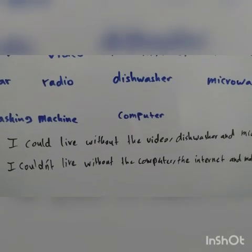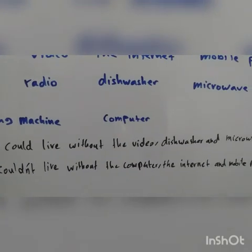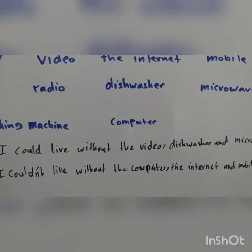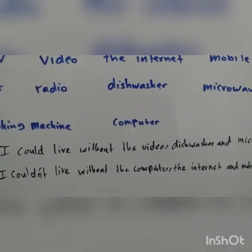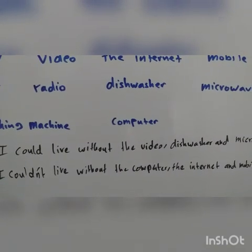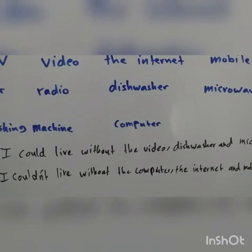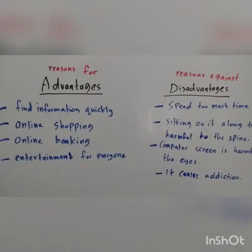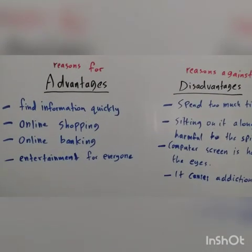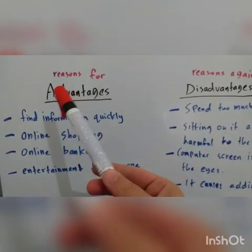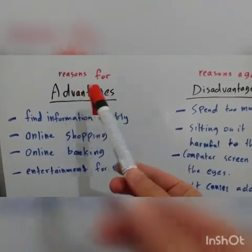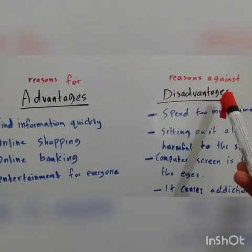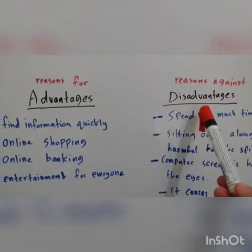Try to write your own sentences — three things that you could live without and three things that you couldn't live without. When you write your discussion essay, you have to outline reasons for, which are called the advantages, and reasons against, which are called the disadvantages.